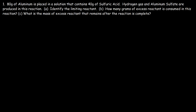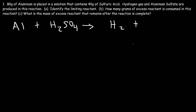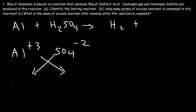The first thing we need to do is write a reaction and balance the equation. Aluminum is placed in a solution with sulfuric acid, H₂SO₄, and it's going to produce hydrogen gas and aluminum sulfate. What is the chemical formula of aluminum sulfate? Aluminum has a positive three charge and sulfate has a minus two charge, so the correct formula is Al₂(SO₄)₃.